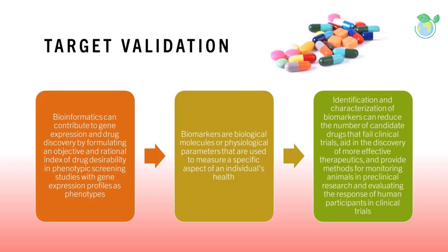Biomarkers are biological molecules or physiological parameters used to measure a specific aspect of an individual's health. They can be used to diagnose or monitor a specific disease or condition, or to predict an individual's risk of developing a particular condition. Biomarkers can be classified into several categories: genetic biomarkers are based on specific gene sequences or variations; proteomic biomarkers are based on the presence or absence of specific proteins; cellular biomarkers involve the measurement of characteristics of cells, such as their size or shape; while physiological biomarkers include parameters such as blood pressure or body temperature. Identifying the most valuable biomarkers often requires investigating a broad range of sources, including cellular, proteomic, and genetic data.